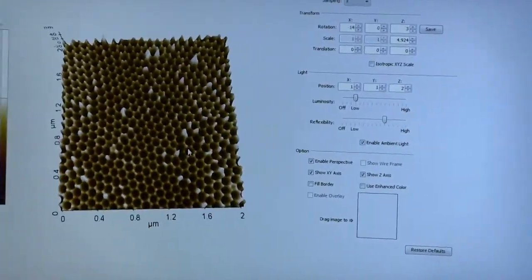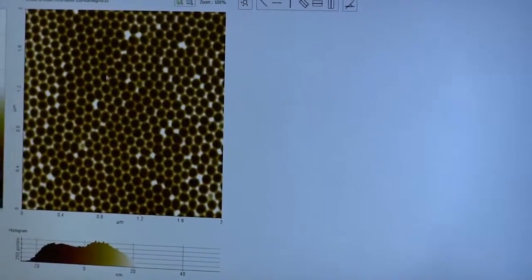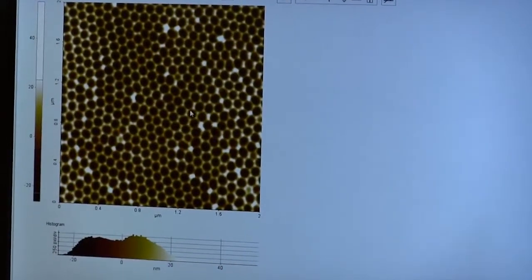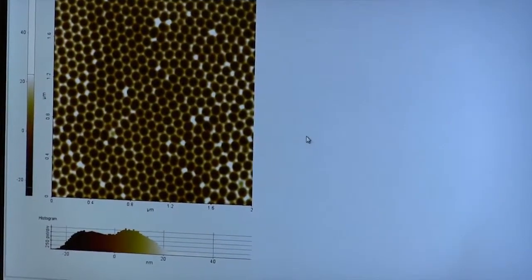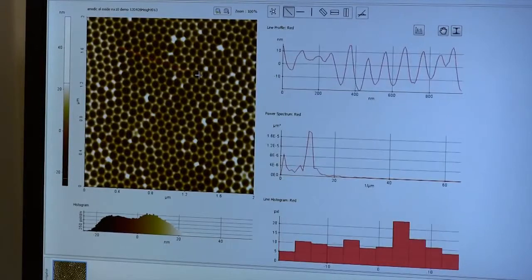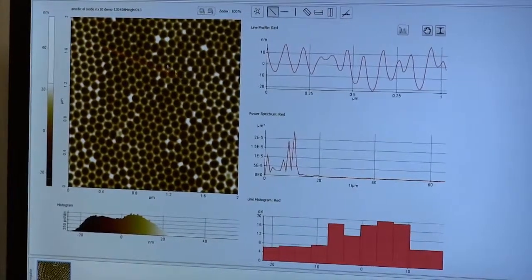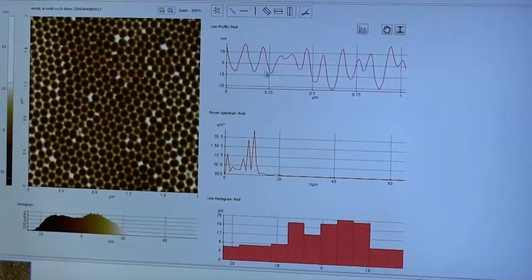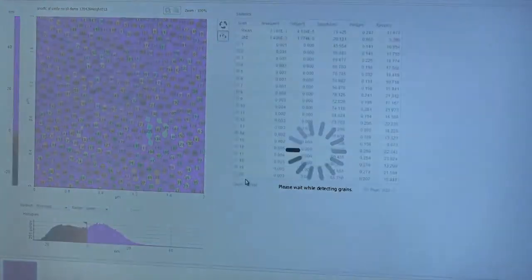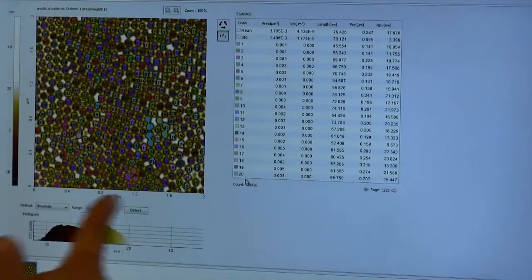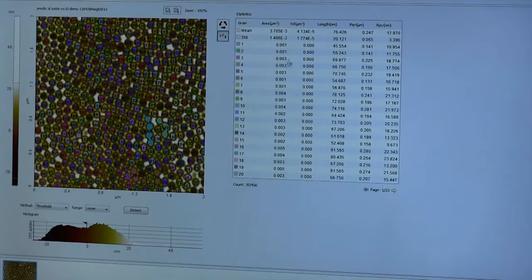So one thing we might be interested in is the diameter of these pores on this surface. A few different ways we could take measurements of that are we could draw in a line and look at a height profile along that line, or we could use the automated grain detect feature in the software to count the number of pores for us and give us statistics about the average length and the average area.